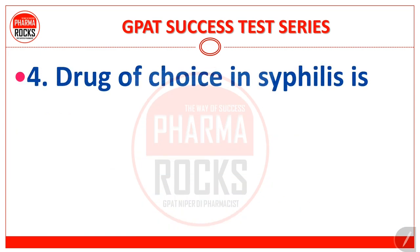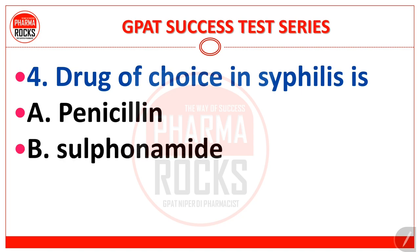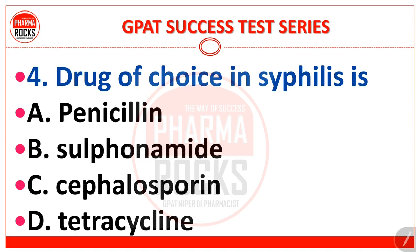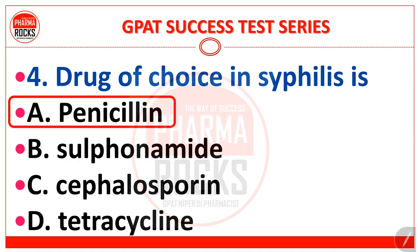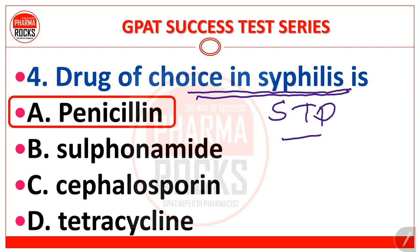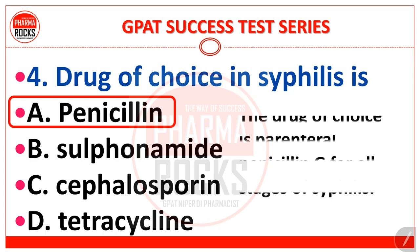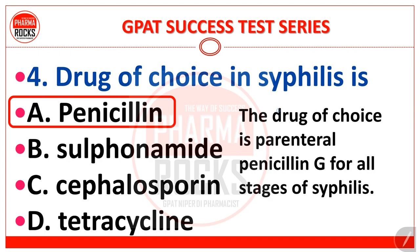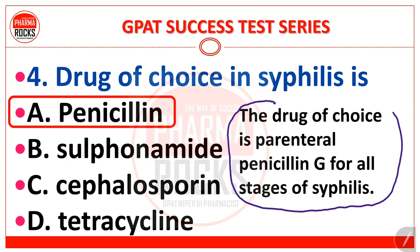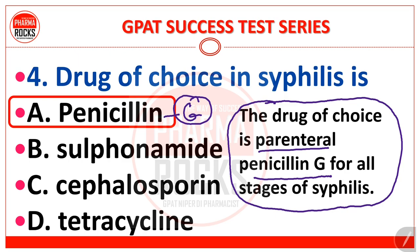Question number 4: drug of choice in syphilis is — penicillin, sulfonamide, cephalosporin, or tetracycline? The correct answer is option 1: penicillin. Syphilis, a sexually transmitted disease — ke liye precisely penicillin drug of choice hai. The drug of choice is parenteral penicillin G for all stages of syphilis. Especially Parenteral Penicillin G is the drug of choice in syphilis.